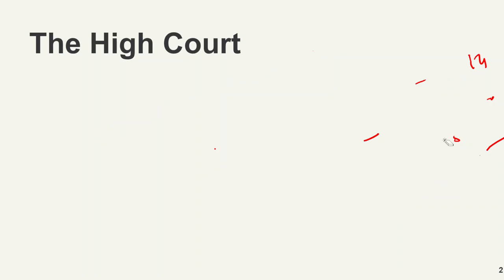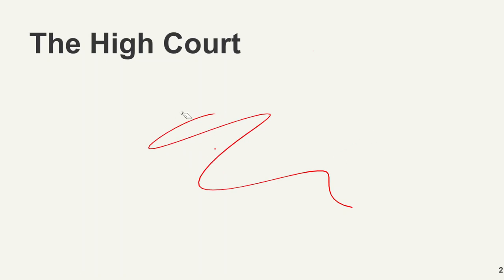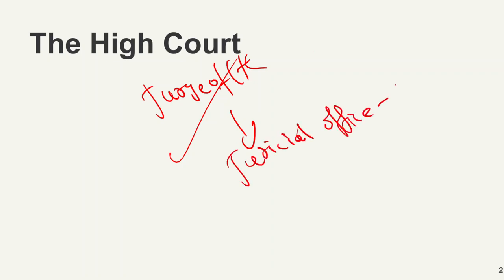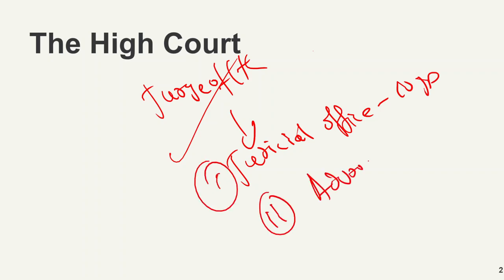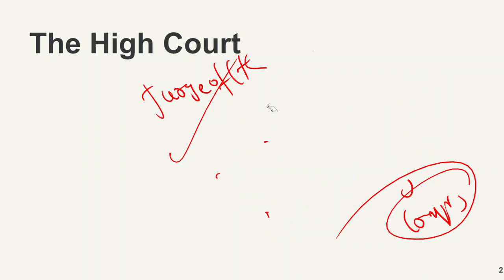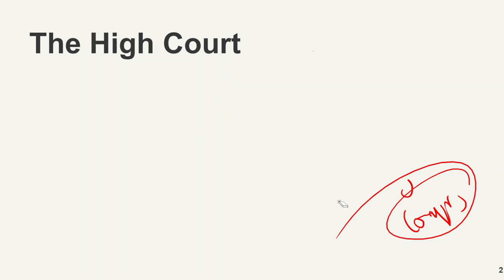To become a judge of a High Court, you need either: (1) to have been in judicial office for 10 years, or (2) to have been an advocate of a High Court for 10 years. These qualification-related questions are frequently repeated in competitive exams.